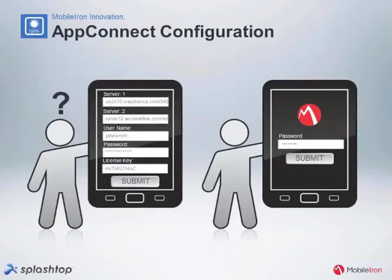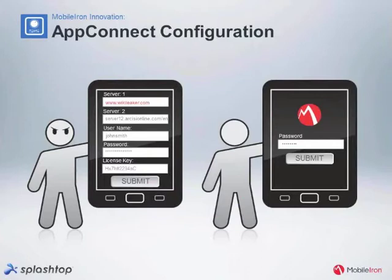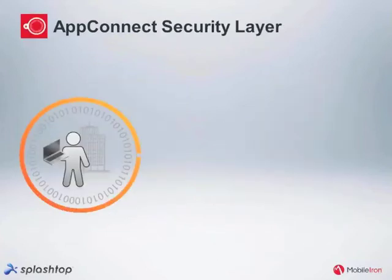The great thing about AppConfig is we can set all the data for the user so he can get directly into his container without having to do anything. He just has to input his passcode for the container, and then every app inside will know exactly where to go, what server to hit, and have his username and password done for him. He has one password to remember, and all the apps inside the container are automatically configured and turned on.